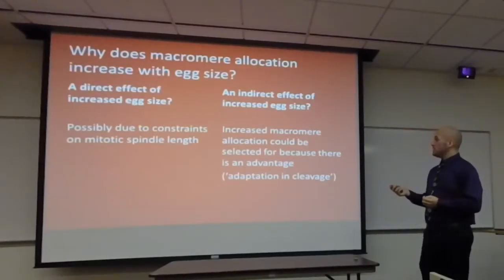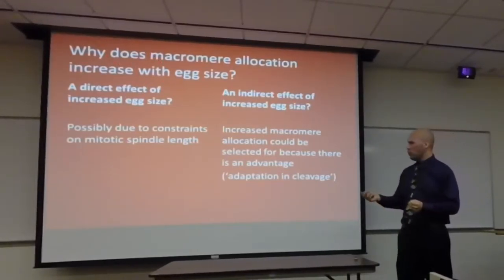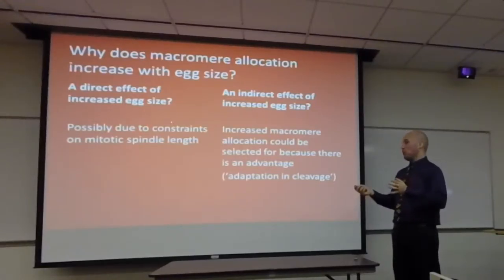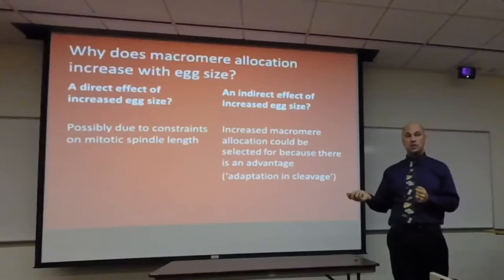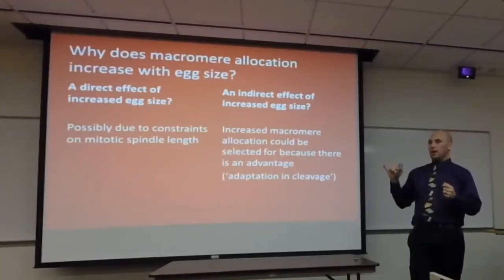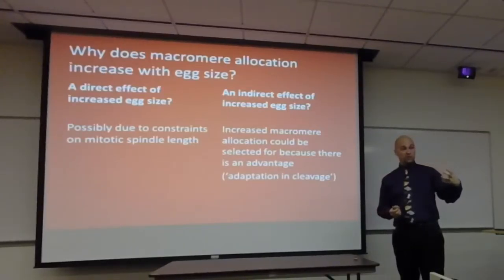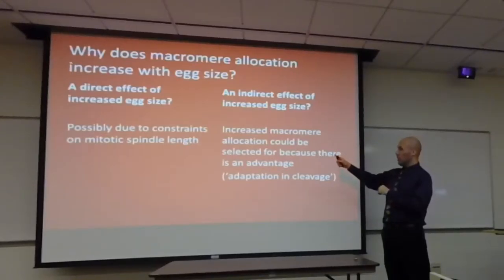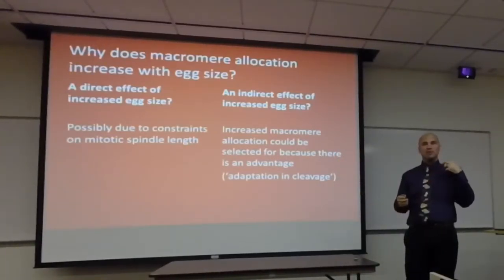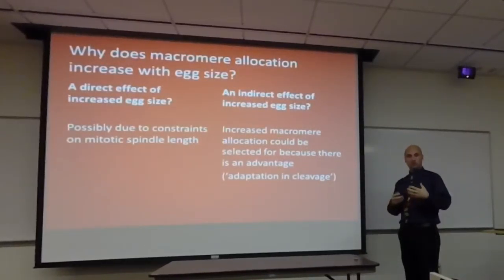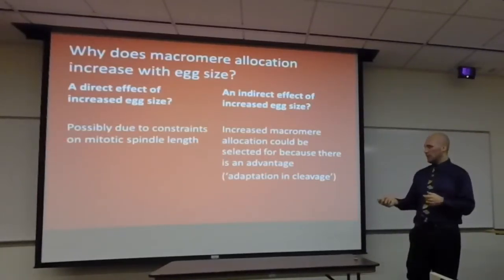Why does macromere allocation increase with egg size? Two possible mechanisms: a direct effect, possibly due to constraints on the mitotic spindle, or an indirect selective advantage. For the direct effect: if one end of the mitotic spindle is attached to the animal pole and the spindle length does not change as egg size increases, then larger eggs would automatically make macromeres relatively larger. An indirect effect would mean increased macromere allocation provides some evolutionary selective advantage — this would be an adaptation of cleavage.